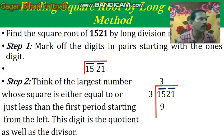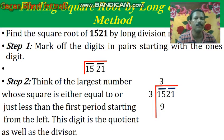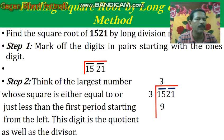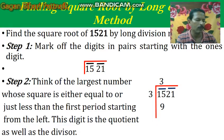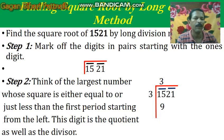So in step one, what will you do? Mark the digits in pairs starting with the one's digit. Here you see, the one's digit is 1. From your right side, you will start marking pairs. So 21 is one pair and 15 is another pair.